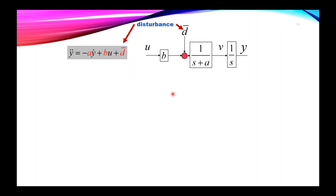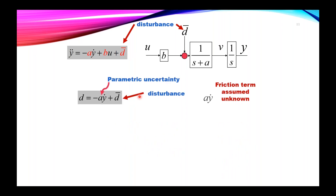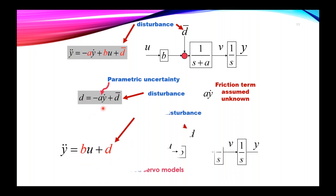For the purpose of this tuning, we consider the two models and make the assumption that the friction term A multiplied by y-dot, the viscous friction term, is assumed unknown. We add this parametric uncertainty associated with the friction term to the original disturbance to obtain a new disturbance T. This allows us to obtain two new perturbed servo models which only depend on the servo input gain B and also have the disturbance T.